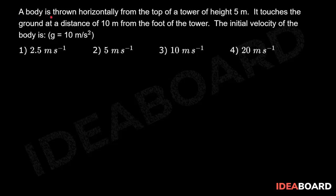A body is thrown horizontally from the top of a tower of height 5 meters. It touches the ground at a distance of 10 meters from the foot of the tower. The initial velocity of the body is to be determined, given g equal to 10 meter per second square.